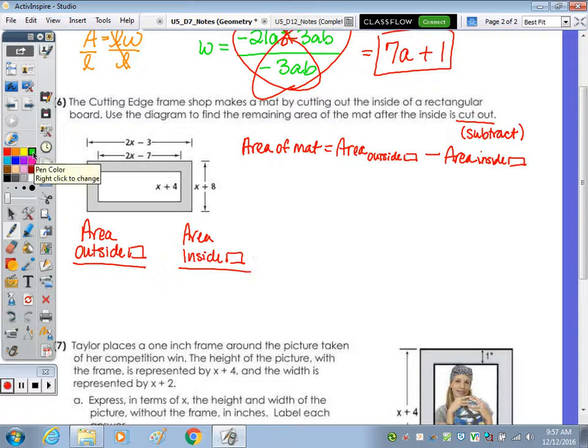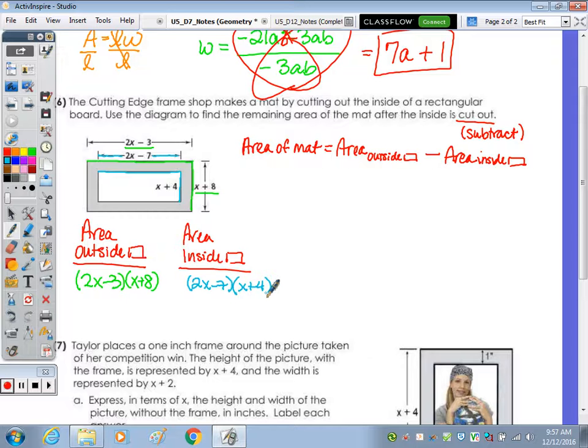The outside rectangle, using color, this whole length is 2x minus 3, and this whole length is x plus 8. Area of the rectangle is length times width, so I'm going to multiply (2x minus 3) times (x plus 8). Using the distributive property, we're going to distribute the 2x all the way through. 2x times x is 2x squared, 2x times 8 is 16x. Now distributing the negative 3 through, negative 3 times x is negative 3x, and negative 3 times positive 8 is negative 24.